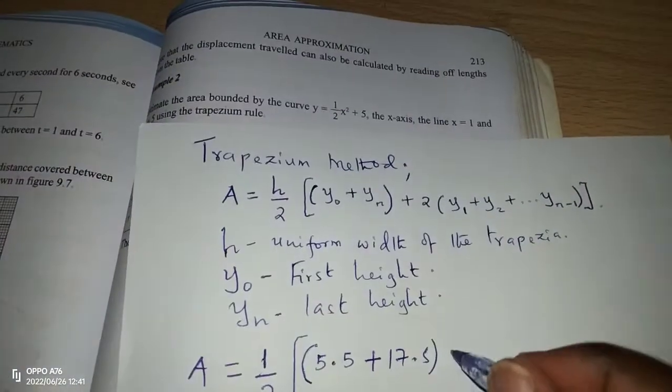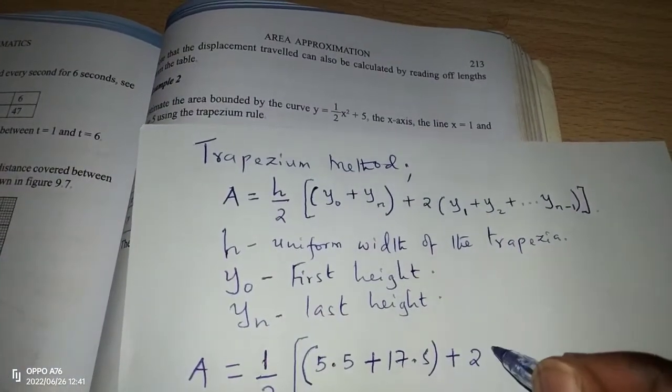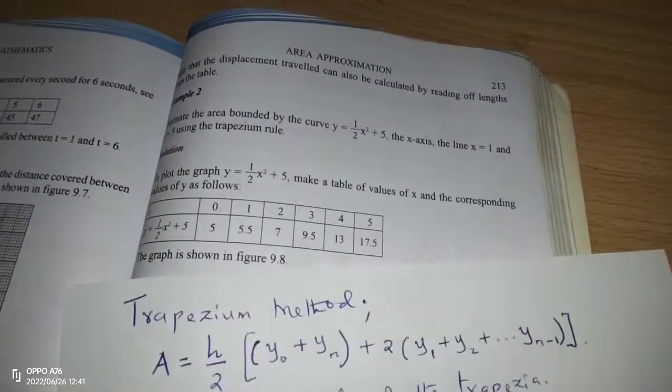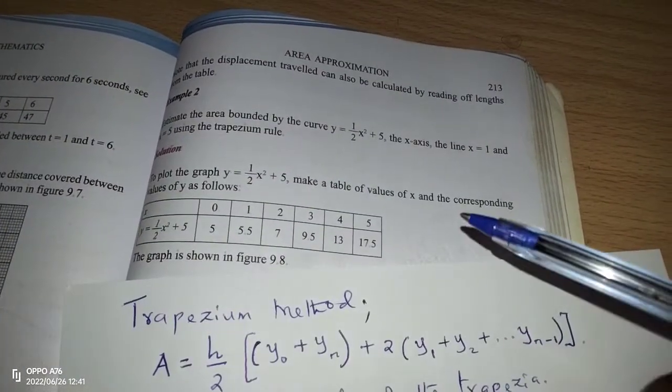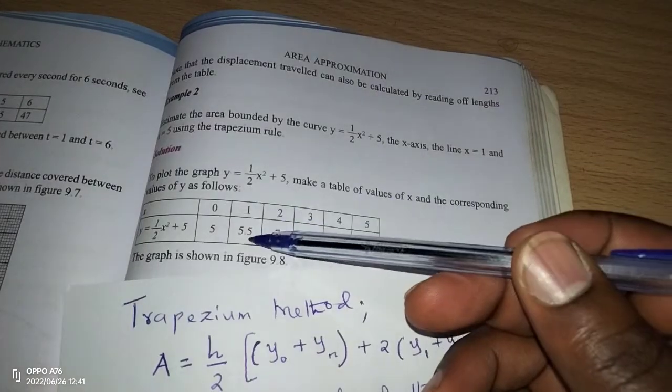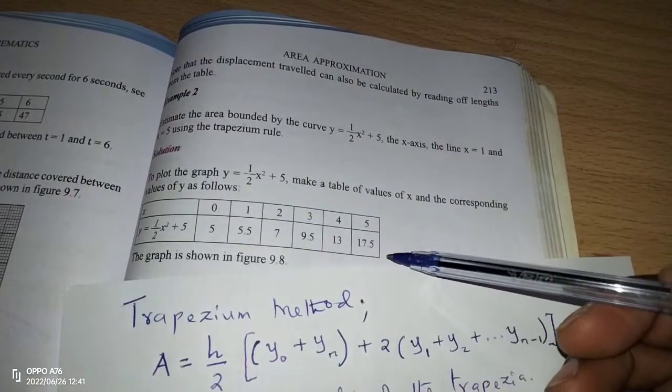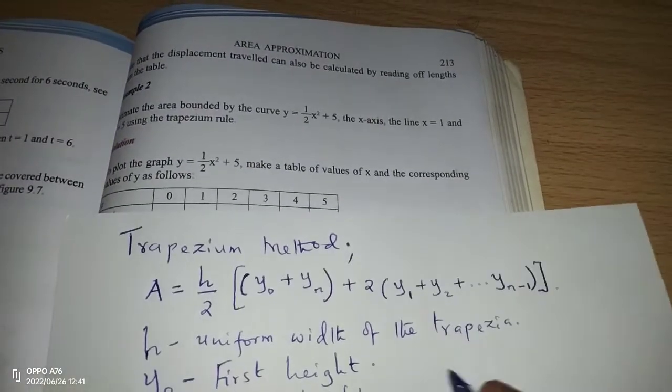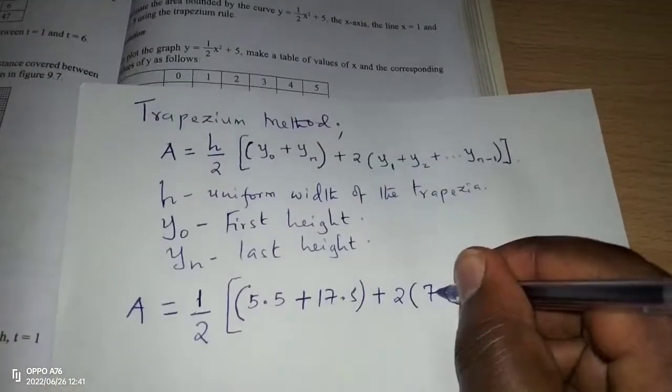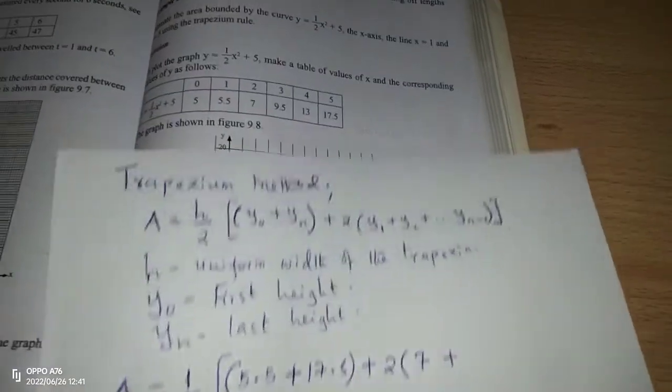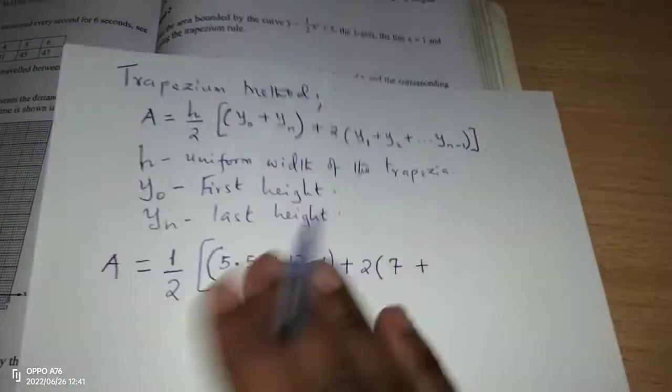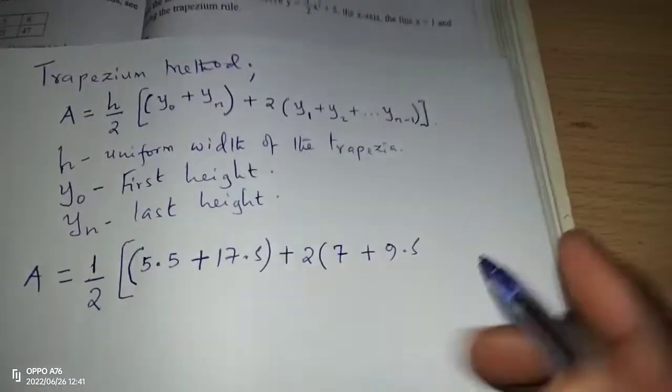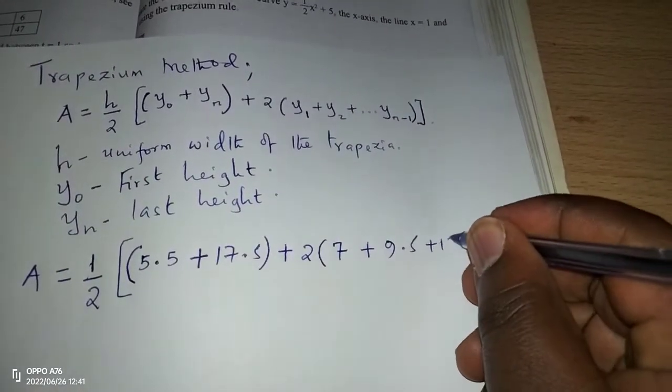Now we add 2 and we open brackets again. We add all the other values of y in between the first value and the last value. And we're going to have 7, plus the next value 9.5, and the other one is 13.